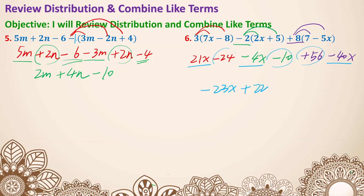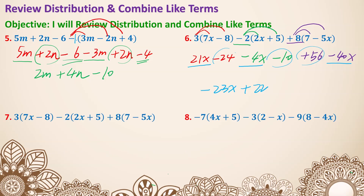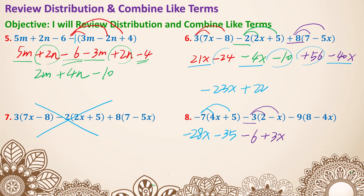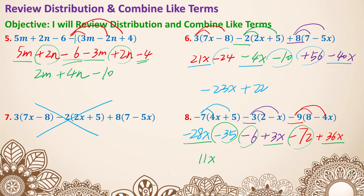That's the final answer for number 6. Pause here and try examples 7 and 8. Number 8: negative 7 times 4x and 5 gives negative 28x minus 35. Then negative 3 multiplied with 2 multiplied with negative x — that's a negative 6, so plus 6x. On the back, negative 9 distributed to 8 and negative 4x gives negative 72 and positive 36x. Combining like terms: negative 28x, positive 3x, and positive 36x is 11x. Negative 35, negative 6, and negative 72 is minus 130. That's number 8.